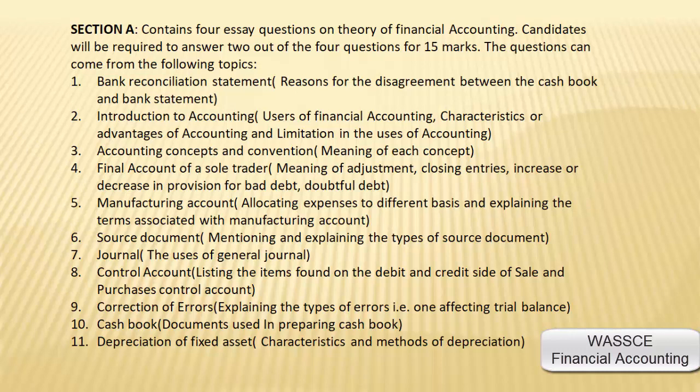Number nine, correction of errors — students are expected to define errors and also explain the types of errors, that is, the ones affecting the trial balance. Number ten, cashbook — students are to define cashbook and the documents used in preparing the cashbook. Number eleven, depreciation of fixed assets — students are expected to define assets, define depreciation, and explain the characteristics and the methods of depreciation.